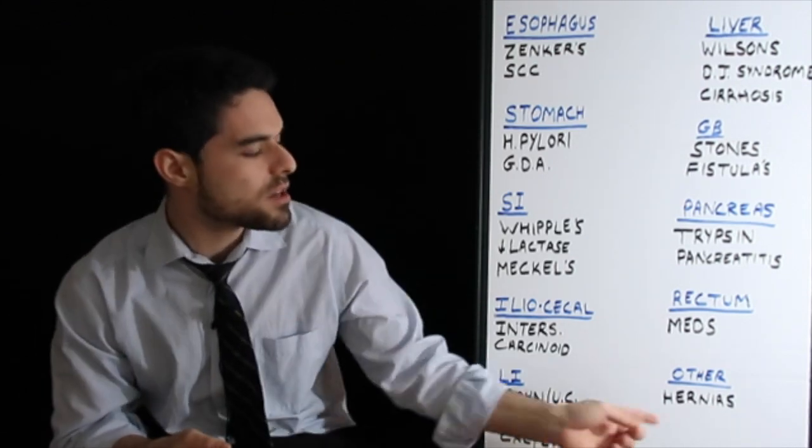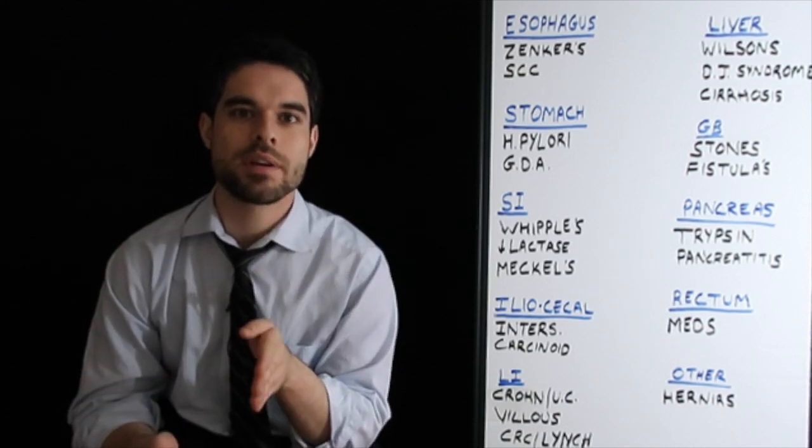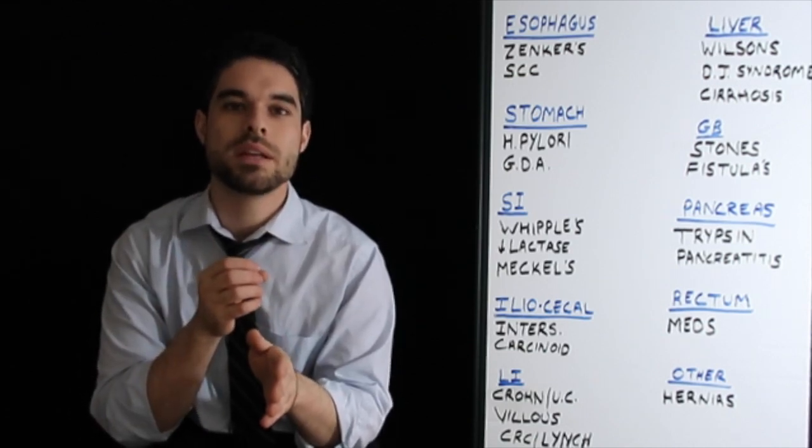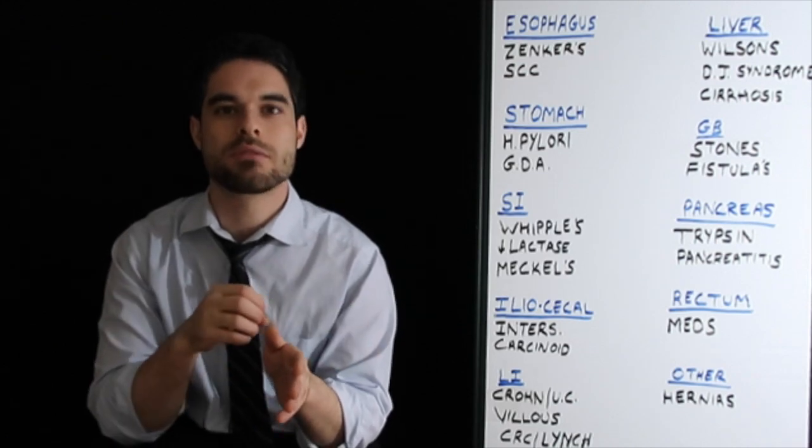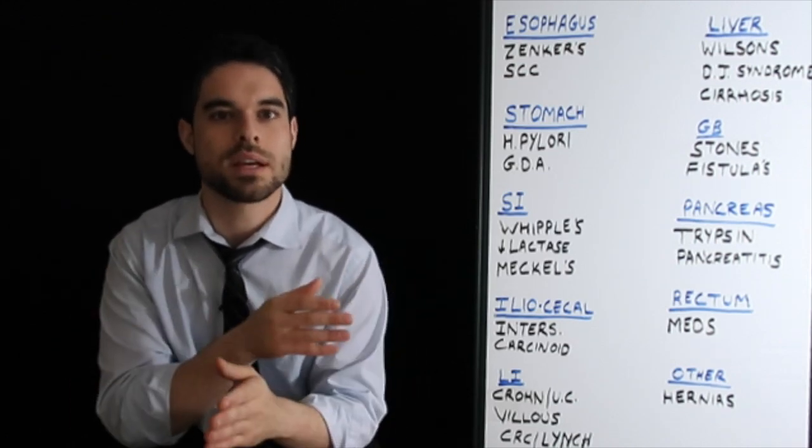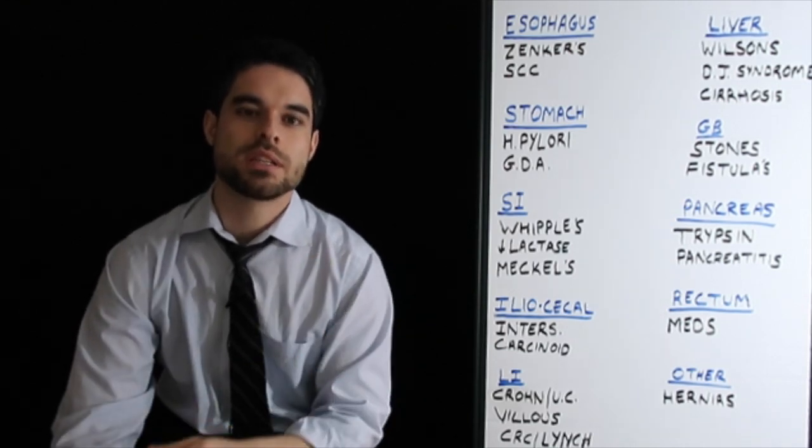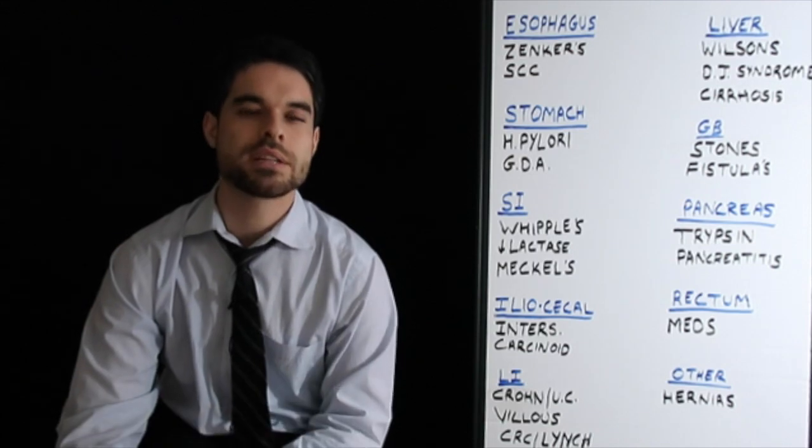The last topic here is the hernias. So inguinal hernias, you have your inferior epigastric artery, medial ones, medial to that is going to be direct hernias. Lateral is going to be indirect. I remember MD, we're all trying to be doctors, medial is direct. And it goes directly through the transversalis fascia. That's where it's going through the transversalis fascia.